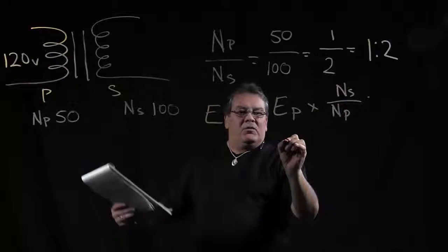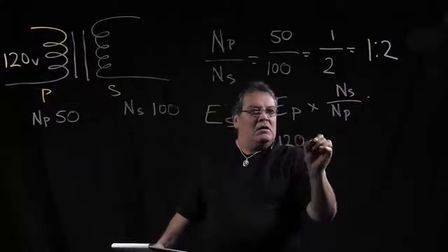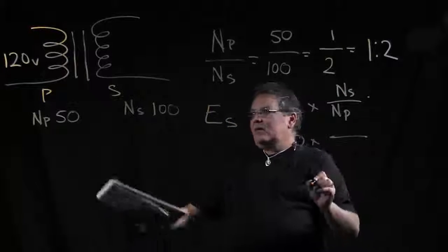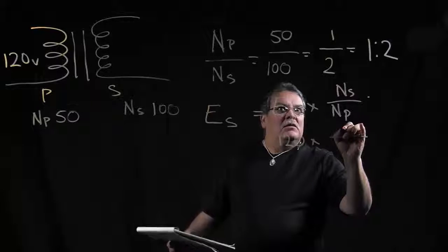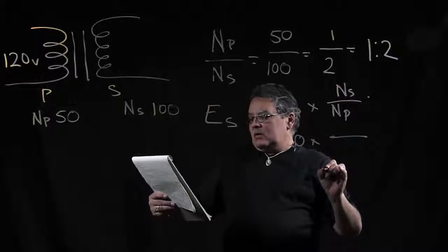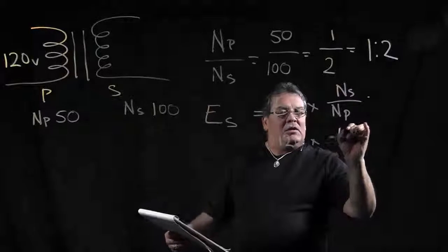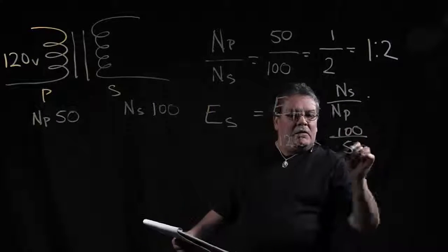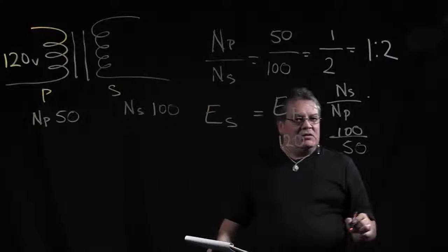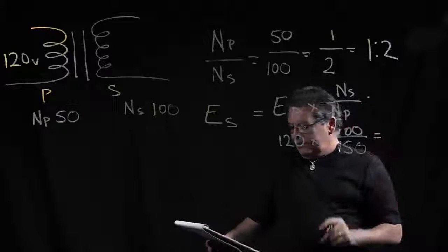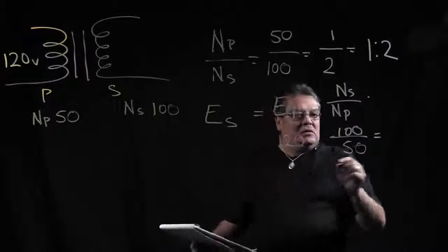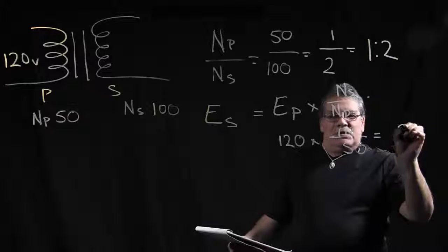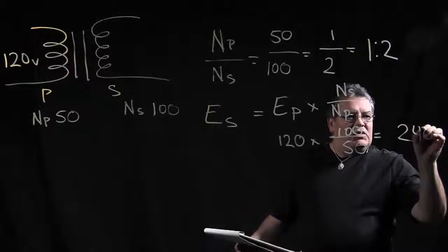So our primary voltage is 120 times 100. Wait, I'm sorry. Yes, 100, and our turns in the secondary is 50. So if you do this multiplication, what comes out is you start it off with 120 volts, and you end up with, after you do your math here, it's 240 volts.